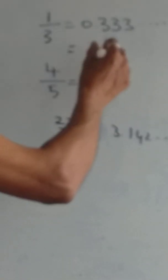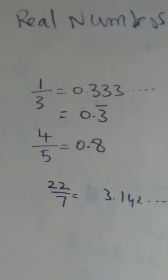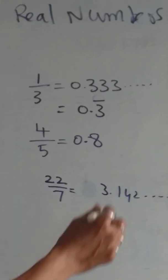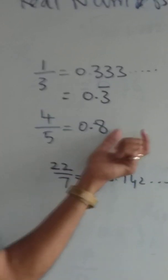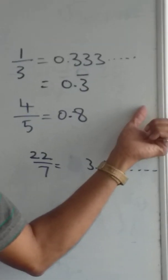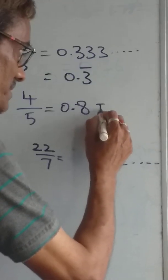I've given three examples of decimal numbers. Whichever number is terminated, like 0.8, afterwards I'm not getting any other numbers. So this we call terminated.